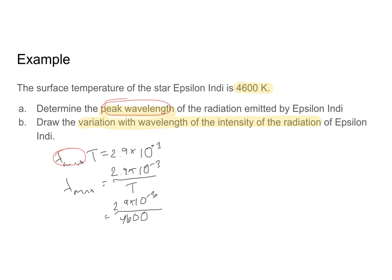So 2.9 times 10 to the negative three divided by 4600. If you are given your temperature in Celsius, don't forget to do that unit conversion. So right now, while I'm talking to you, I'm just throwing my answer in the calculator. So I'm doing 2.9 times 10 to the negative third, and I'm going to divide that by 4600. And when I do, I get that my peak wavelength is 6.30 times 10 to the negative seventh meters, or if I'm feeling fancy, I can write that as 630 nanometers. And there's my answer for part A.